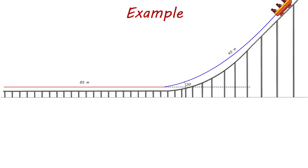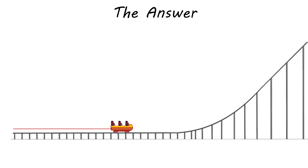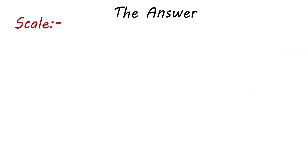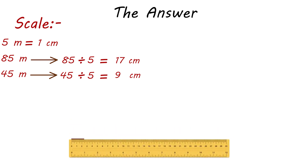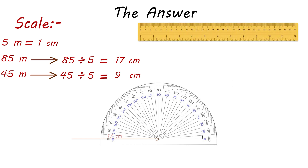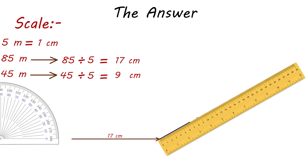Example: A roller coaster moves 85 meters horizontally and then travels 45 meters at an angle of 30.0 degrees above the horizontal. Use graphical techniques to predict its displacement from its starting point. To represent these movements, we choose a scale of 5 meters equivalent to 1 centimeter on the graph. So 85 meters equals 17 centimeters, and 45 meters equals 9 centimeters. We draw the first displacement of 17 centimeters horizontally, then measure an angle of 30 degrees from the head of the first vector and draw a line of 9 centimeters representing the second movement.